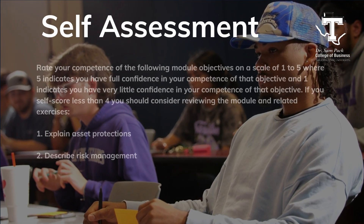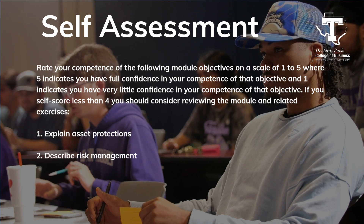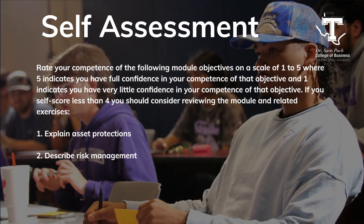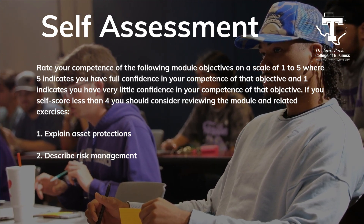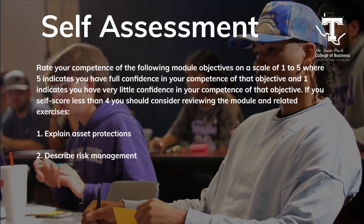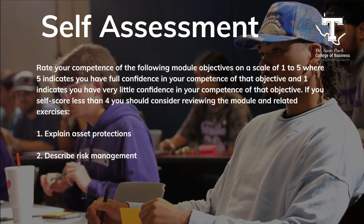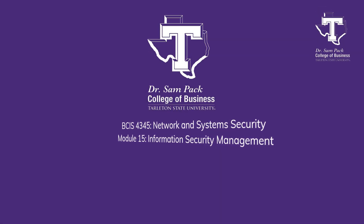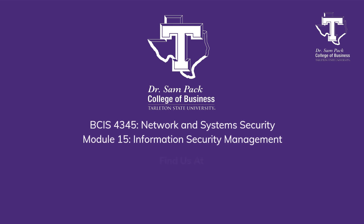Before we wrap up, let's take a moment to reflect on what we've covered. On a scale of 1 to 5, with 5 being 'I've got this down cold' and 1 being 'I'm still pretty unsure,' rate yourself on how well you can explain asset protection and how comfortable you are describing risk management. If you find yourself scoring below a 4 on either of these, it might be worth revisiting the material. As we wrap up Module 15, we've dived into the critical aspects of asset protection and risk management — safeguarding organizational assets, identifying and evaluating risks, implementing strategies to mitigate those risks effectively, managing third-party risks, and the importance of security awareness within an organization.